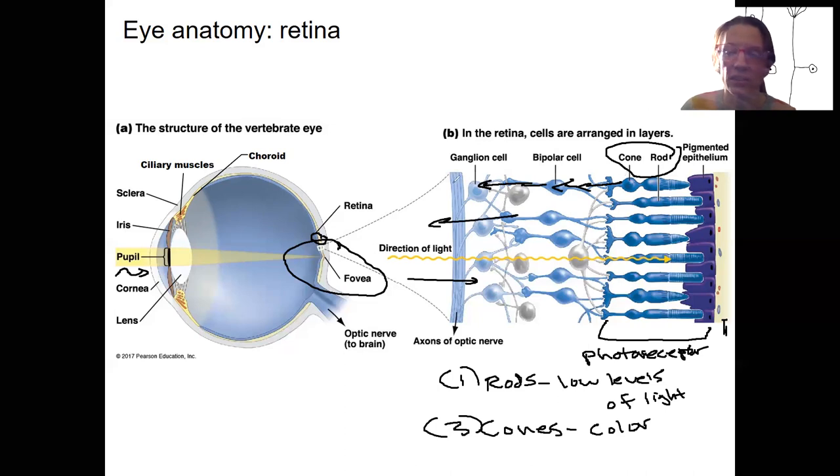The axons of the ganglion cells become the optic nerve. So these axons are all going to travel out right here. What is this little region right here then? That's the optic disc. This is the location in the retina where there are no photoreceptors because the optic nerve is traveling through there. It has to pass through.